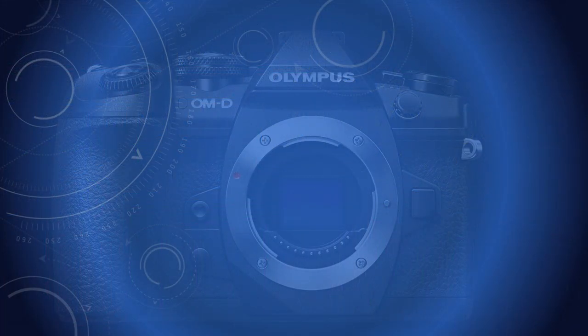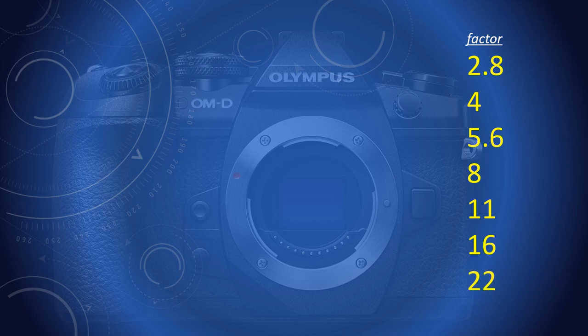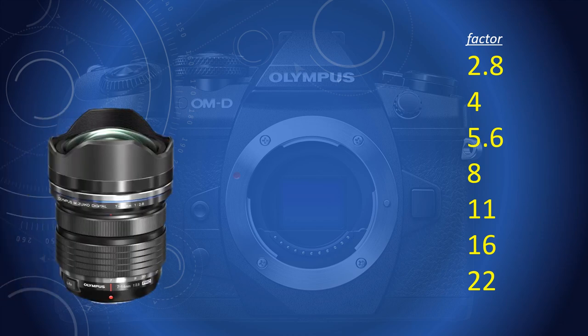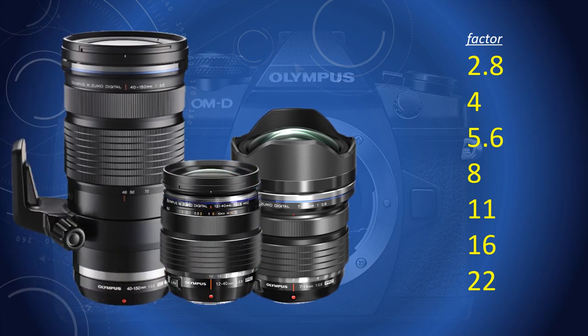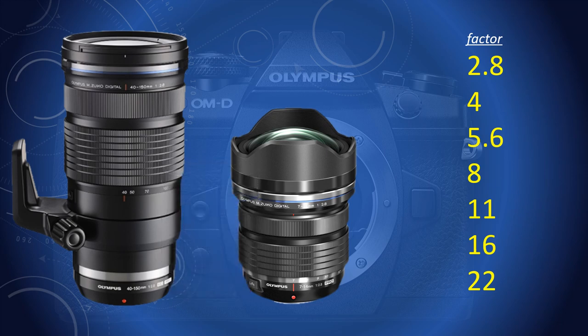With each aperture increment from f2.8 through to f22, depth of field increases by stages. There is no fixed amount — that depends on lens choice, and if using a zoom, it will adjust every time the control is changed, even the slightest amount between wide-angle and telephoto. A wide-angle optic increases depth of field at any aperture setting; a telephoto reduces it. Focal lengths are not specified here because that depends on the format — whether full-frame, Micro Four Thirds, or something else.